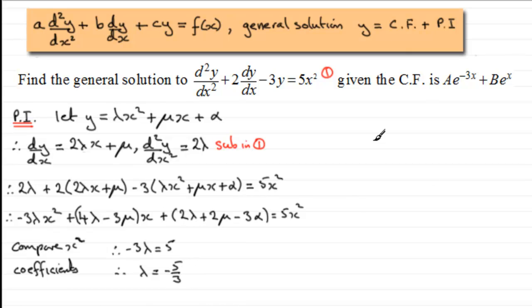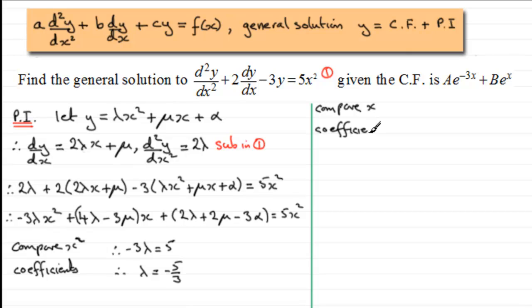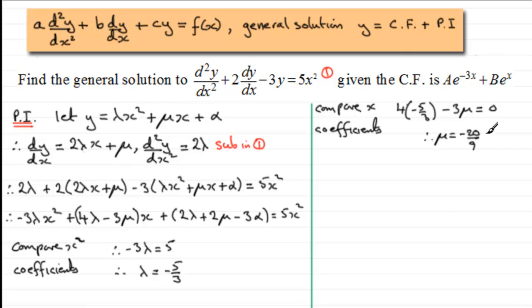Next, comparing x coefficients: 4λ − 3μ = 0. Substituting λ = −5/3 gives 4(−5/3) − 3μ = 0. Rearranging for μ, we find μ = −20/9.